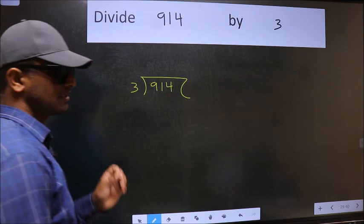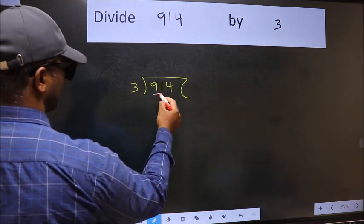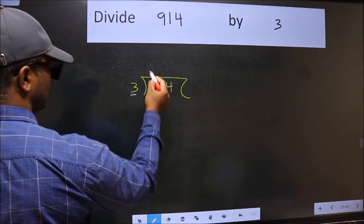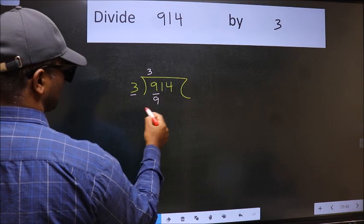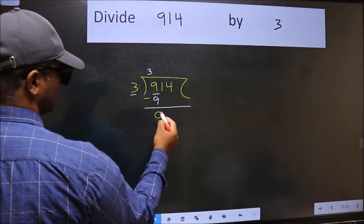This is your step 1. Next, here we have 9 and here 3. When do we get 9 in the 3 table? 3 times 3 is 9. Now we should subtract. We get 0.